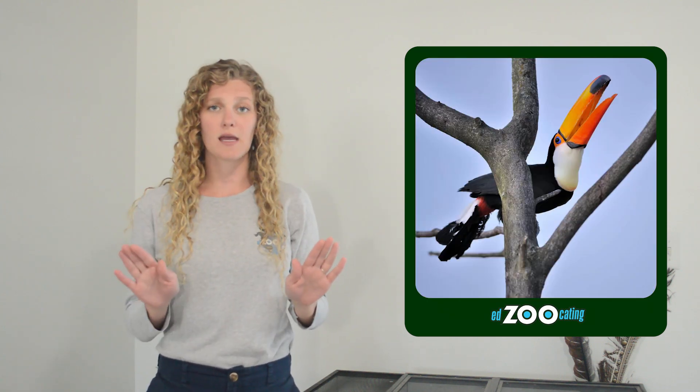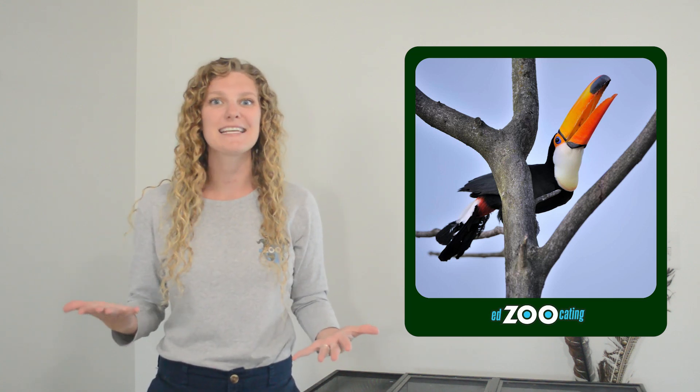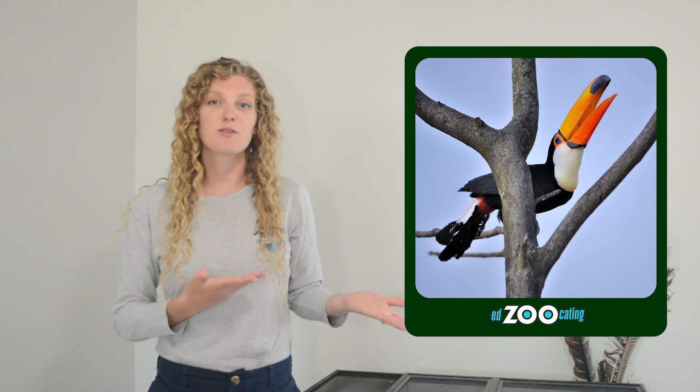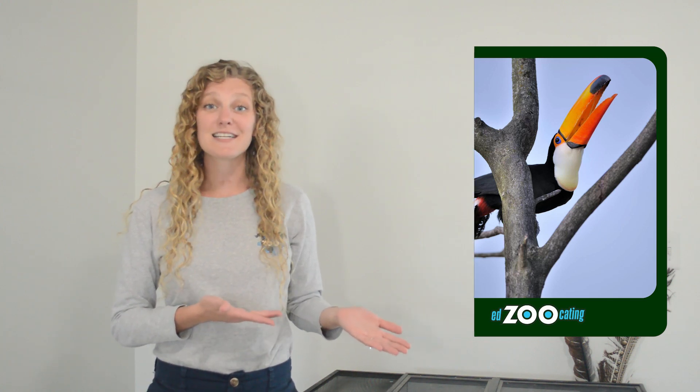Not only do rhinoceros hornbills have a very large casque on their beak, their beak itself is also very large and colorful. And because of that many people get rhinoceros hornbills confused with toucans. But hornbills and toucans are not related and they live in completely different places. Toucans are found mostly in South America and Central America, while hornbills are found in Africa and Asia.